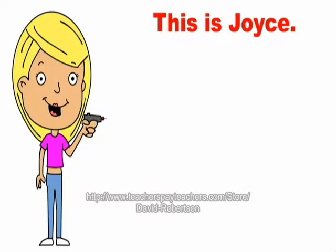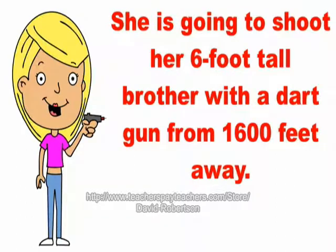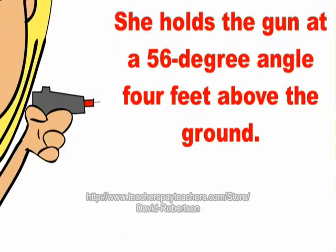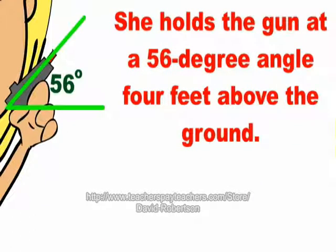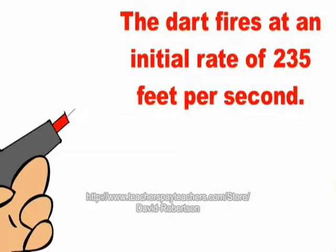This is Joyce. She is going to shoot her 6 foot tall brother with a dart gun from 1,600 feet away. She holds the gun at a 56 degree angle 4 feet above the ground. The dart fires at an initial rate of 235 feet per second.